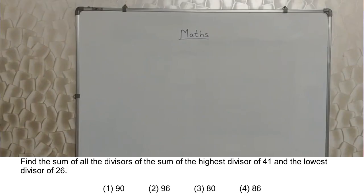Find the sum of all the divisors of the sum of the highest divisor of 41 and lowest divisor of 26.